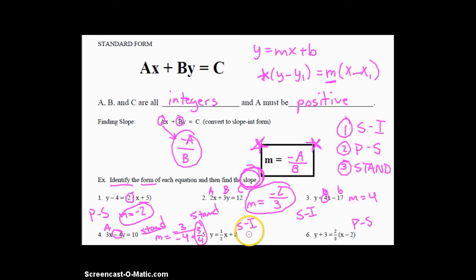Okay, number 5. Slope intercept form. This one's easy. We just circle the 1 half. m is equal to 1 half. And this is point slope form. Yet another easy one to find slope. So m is equal to 2 thirds.